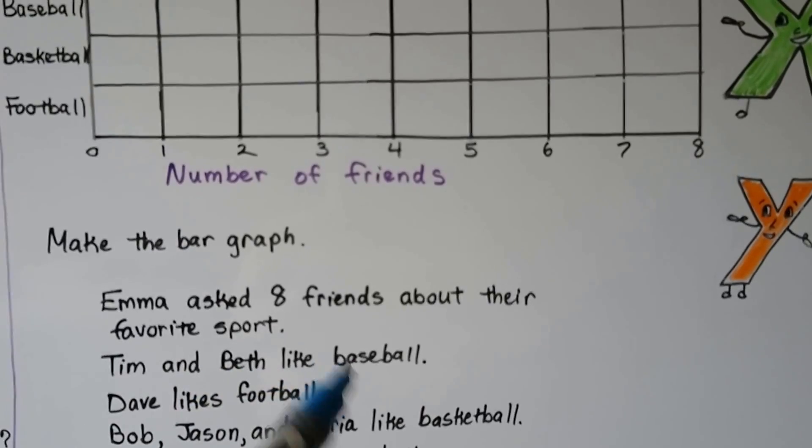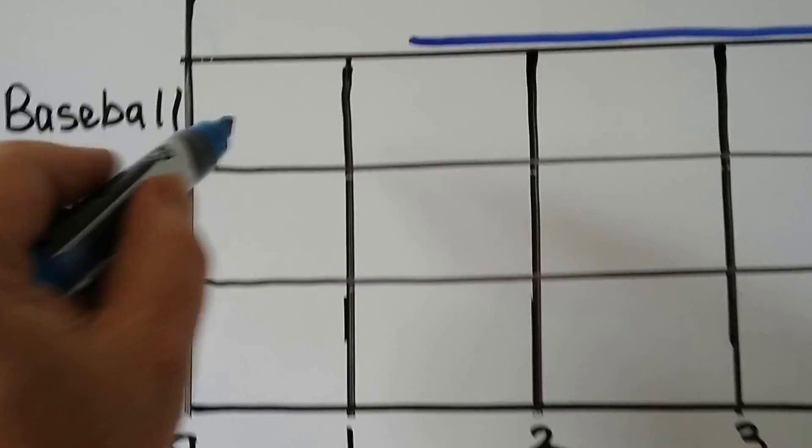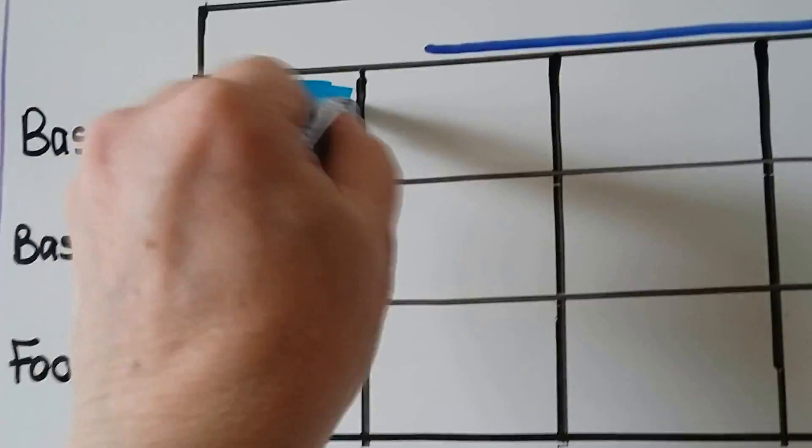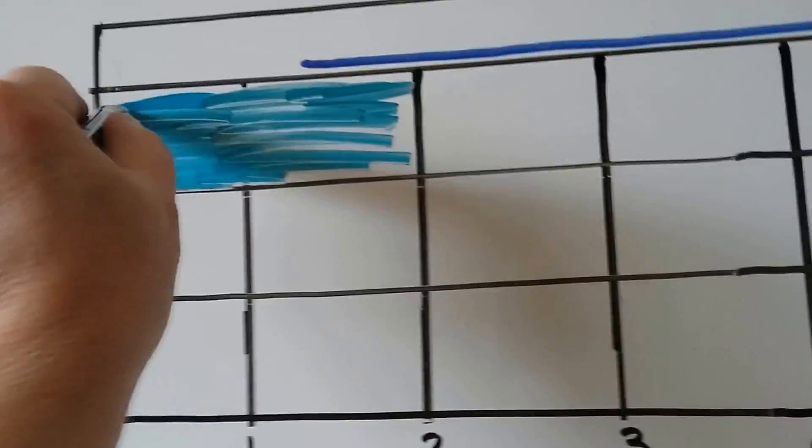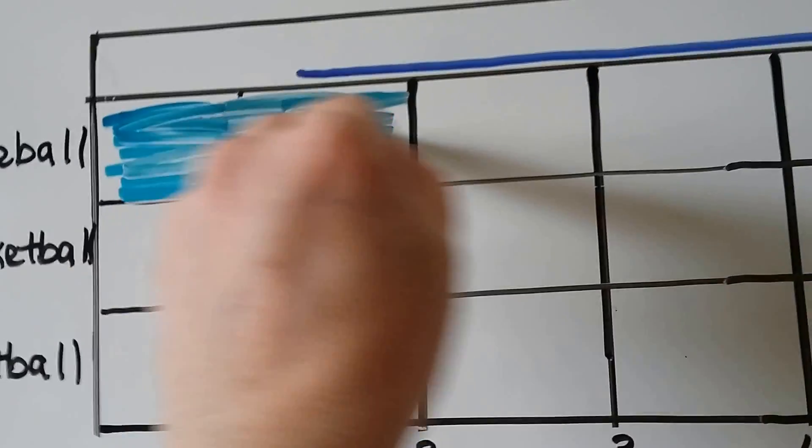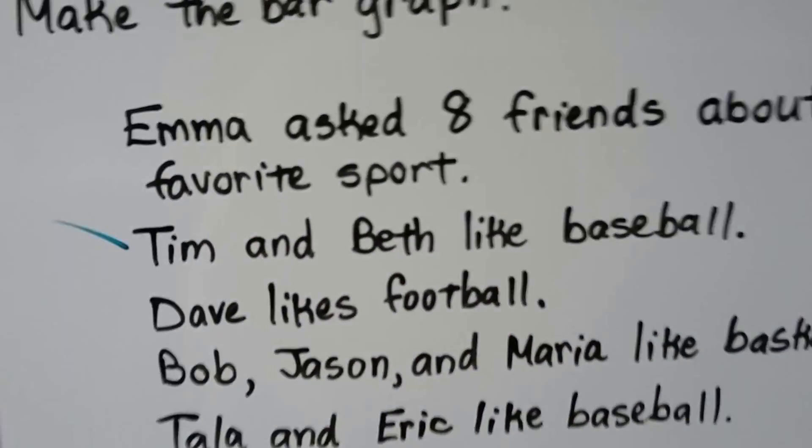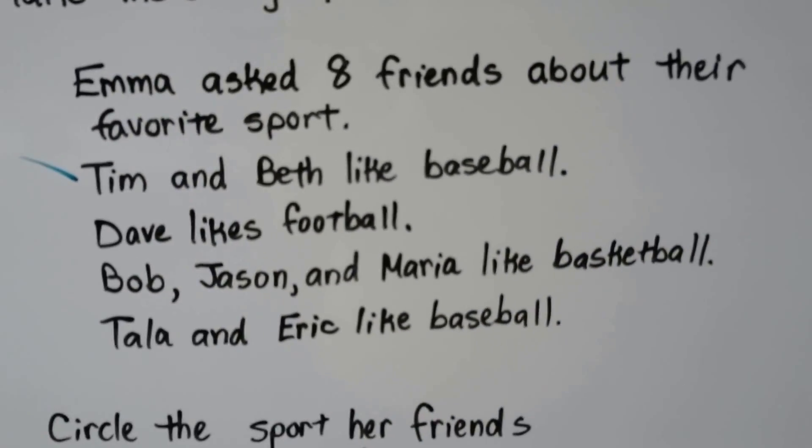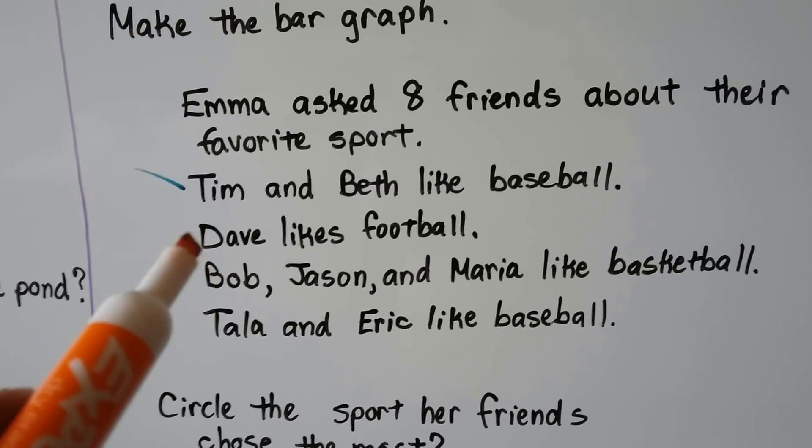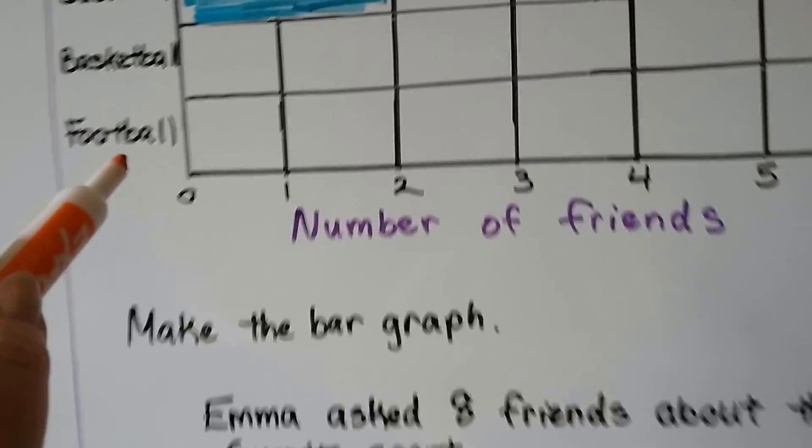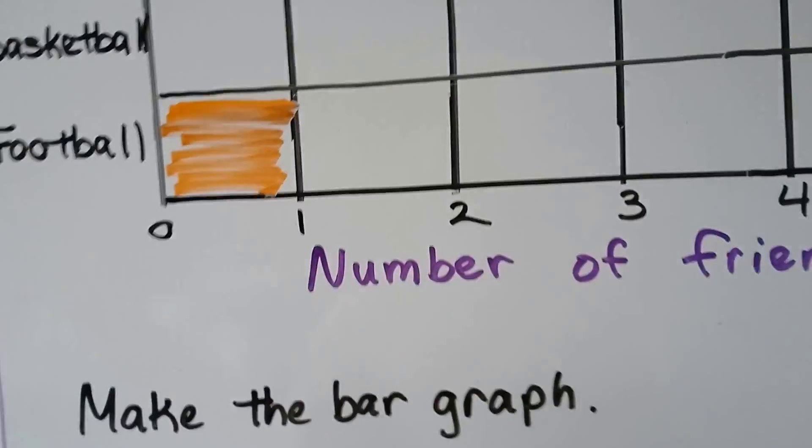It says Tim and Beth like baseball. So that's one box, two boxes that we need to fill for baseball. One, two for baseball. So we did Tim and Beth. Now it says Dave likes football. So we need to give one filled in square box for football. Here's football. Let's do one filled in box for football. You can use orange.